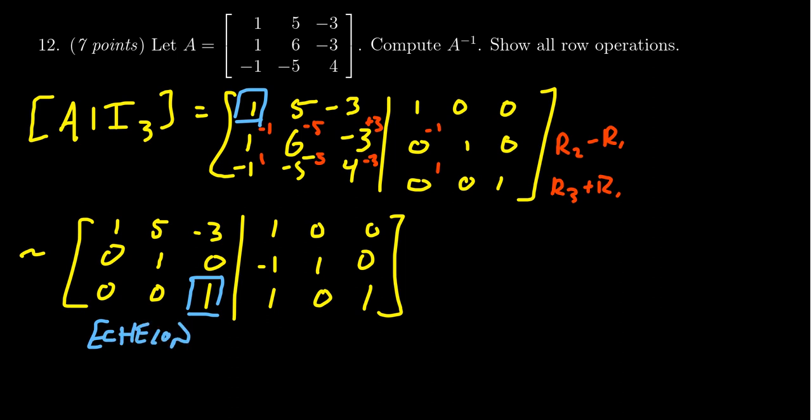So now we're going to start with the backwards phase. We want to get rid of the -3 that's above. So we're going to take row 1 and add to it 3 times row 3. So we get a 3, 3, and 3. And that's the only thing I need to do in that stage.